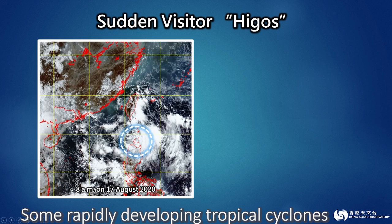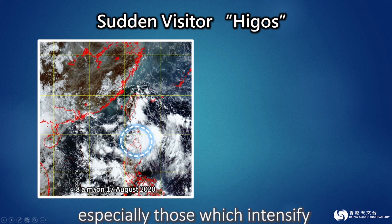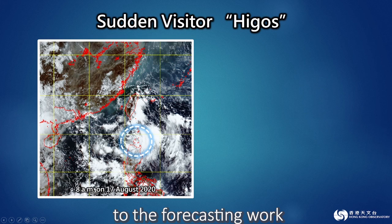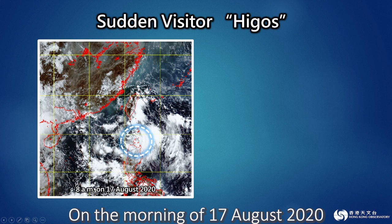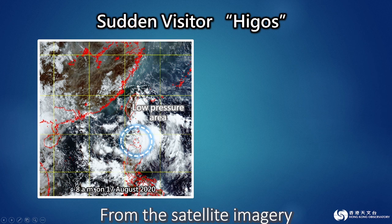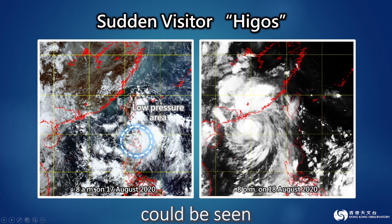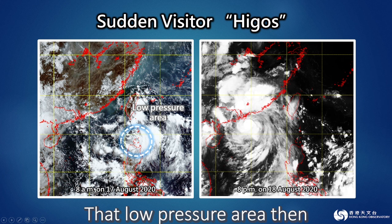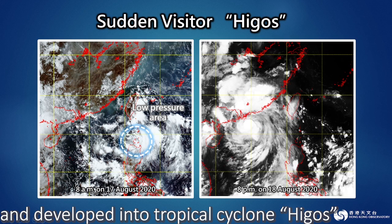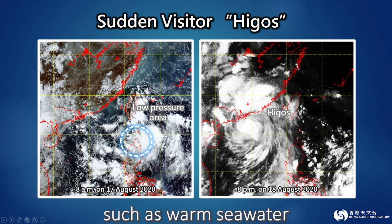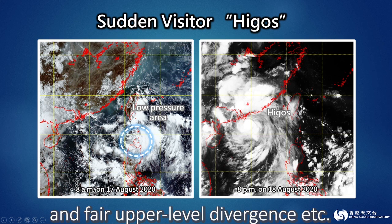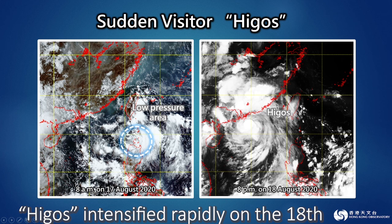Some rapidly developing tropical cyclones, especially those which intensify sharply near the coast, can pose a great challenge to forecasting. On the morning of 17 August 2020, there was a low-pressure area near the Luzon Strait. From the satellite imagery, only loosely organized cloud bands could be seen. That low-pressure area then moved rapidly into the northern part of the South China Sea and developed into tropical cyclone Higos. Under favorable conditions such as warm seawater, weak vertical wind shear, and fair upper-level divergence, Higos intensified rapidly on the 18th.